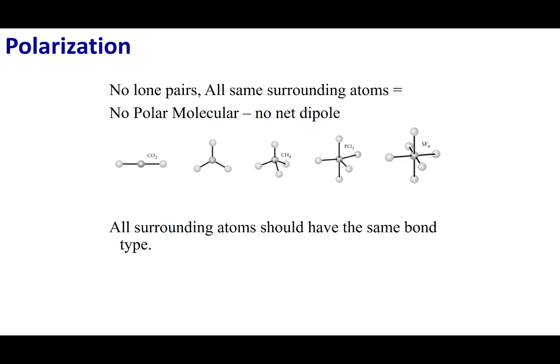Here's a hint when trying to determine if something is polar or not: if the molecule has no lone pairs on the central atom and everything around that central atom is the same, then there is no net dipole and the molecule is nonpolar. That's because a symmetric molecule with identical surrounding atoms will have all dipoles cancel out. However, the converse is not true — if you have lone pairs, it doesn't necessarily mean the molecule is polar. You have to double check it.